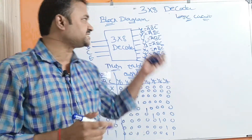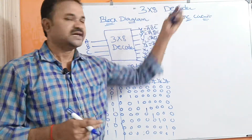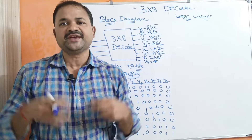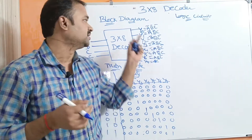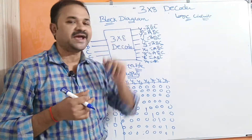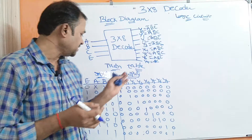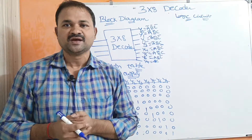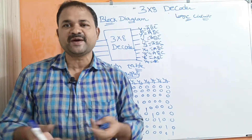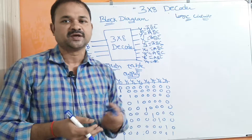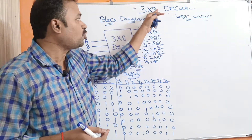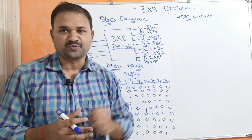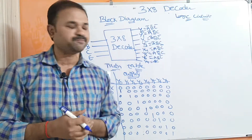Now let us discuss about the 3x8 decoder. In this video we are mainly going to discuss about the block diagram of a 3x8 decoder as well as the truth table and logic circuit. First let's see what is a 3x8 decoder. A 3x8 decoder has three inputs and eight outputs. Let's see the block diagram.